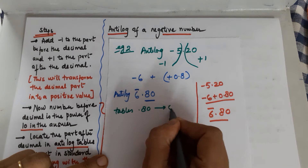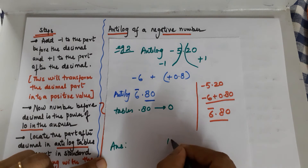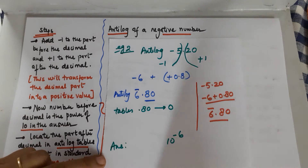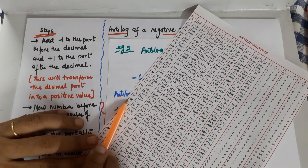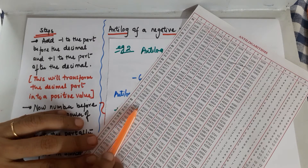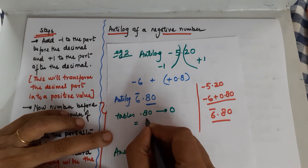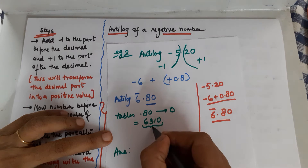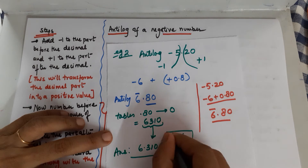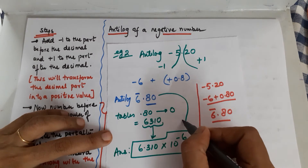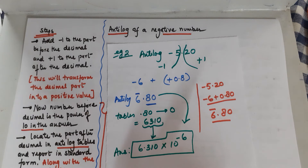So for the antilog table you need to check 0.80 in column 0. The minus 6 goes directly into your answer as the power of 10, giving 10 to the power minus 6. Locating 0.80 in column 0 of the antilog table gives 6310. So the value from the tables is 6310. Reporting it in standard form, the answer for antilog of minus 5.2 is 6.310 × 10 to the power minus 6.